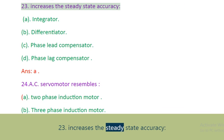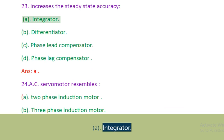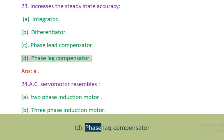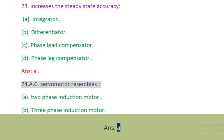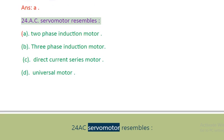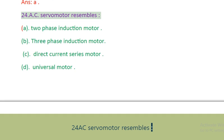Question 23: Which increases the steady state accuracy? A. Integrator. B. Differentiator. C. Phase lead compensator. D. Phase lag compensator. Answer: A.